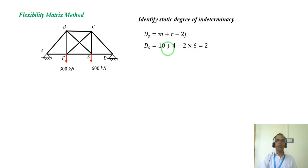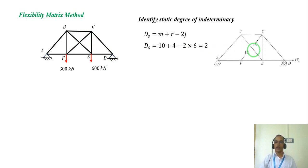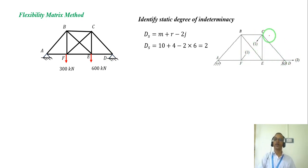This means one is external static indeterminacy, and one of the members is redundant. By assigning a coordinate to that, the structure becomes a release — a determinate structure — by removing the hinge and removing one of the redundant members, making this a statically determinate truss.